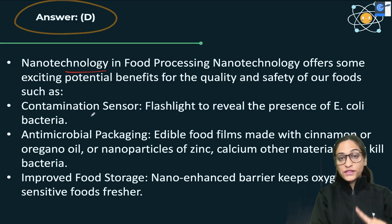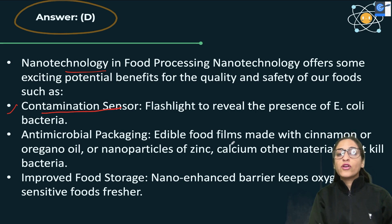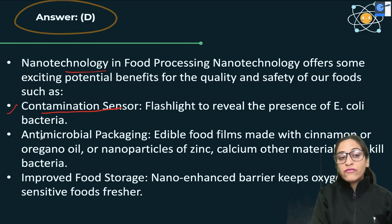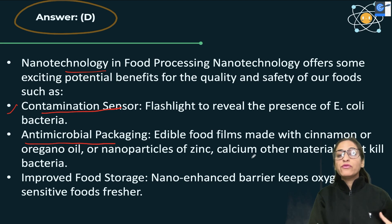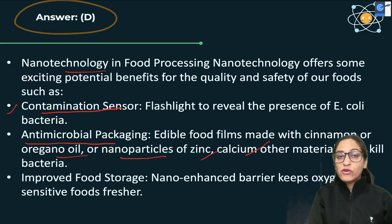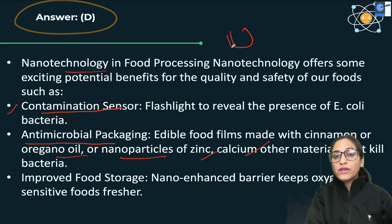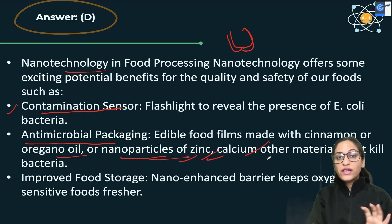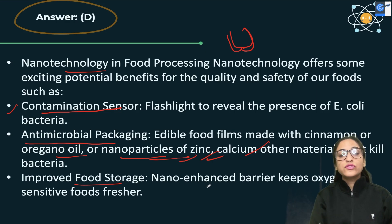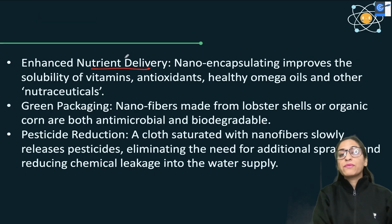Besides these options, you can also use nanotechnology as a contamination sensor — for example, to detect E. coli. Antimicrobial packaging can use edible food films made with cinnamon or oregano oil, or nanoparticles made from zinc, calcium, or other materials that have the capability to kill bacteria, so perishable food items last longer.